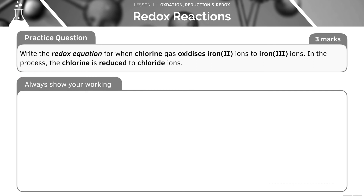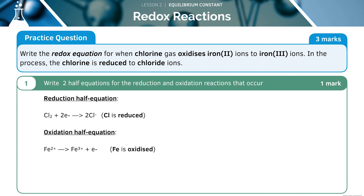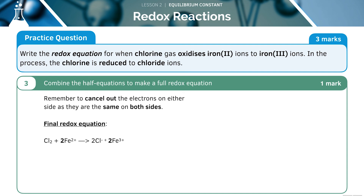Let's attempt this practice question together to apply the rules we have just learnt — pause the video now to try it on your own. Here's the answer — we'll go through it step by step. First, write out the two equations for reduction and oxidation: one for chlorine and one for iron. The chlorine has been reduced, whilst the iron has been oxidised. Next, make sure both equations have the same number of electrons — we've included a 2 in front of the iron equation to balance them. Now we combine the two equations and cancel out the electrons on either side, leaving us with the final answer.